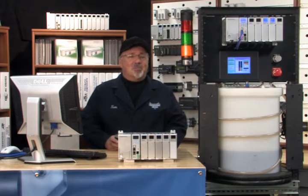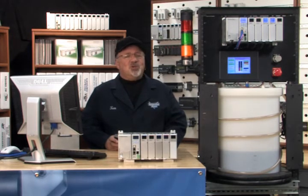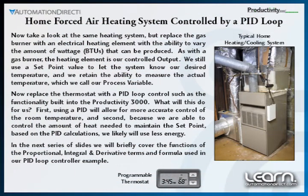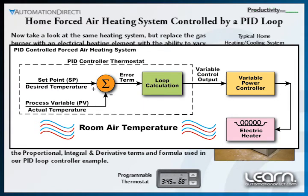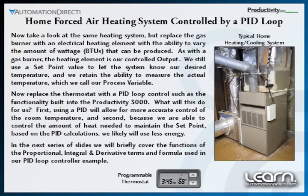Using the same heating system, but instead of an on-off gas burner, we'll use an electrical heater. The electrical heater is controlled with a variable power device that can adjust the heating's wattage output, or BTUs, from zero to full output and anywhere in between. Next, replace the thermostat with a PID loop controller. We still have our set point to fix our desired temperature and the ability to measure the actual room temperature — our process variable — but now we can control the amount of heat we need based on the PID loop's calculations. This ability will produce a more constant result and, in the process, most likely use less energy.